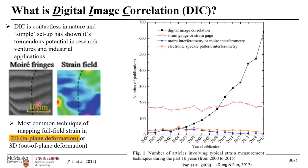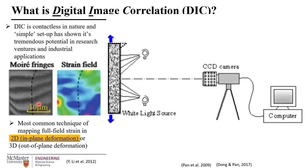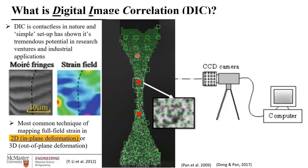For this talk I'll be predominantly focusing on 2D DIC. The setup is relatively simple: you have a specimen to which you apply some sort of speckle pattern to intensify the grayscale variation, a light source assumed to have stable illumination throughout deformation, a CCD camera that captures a series of images as the material deforms, and then these images get processed with DIC software. In post-processing, the user assigns parameters such as facet size and facet step to generate the strain maps.